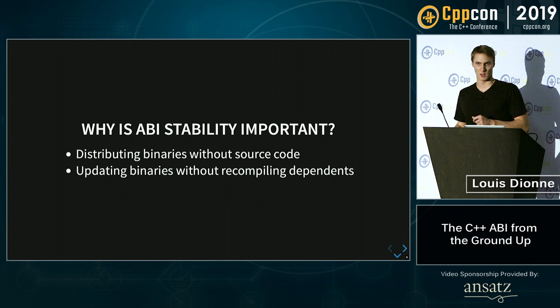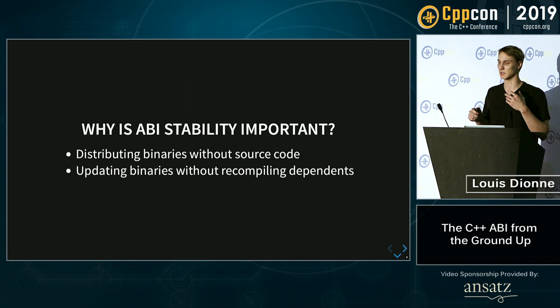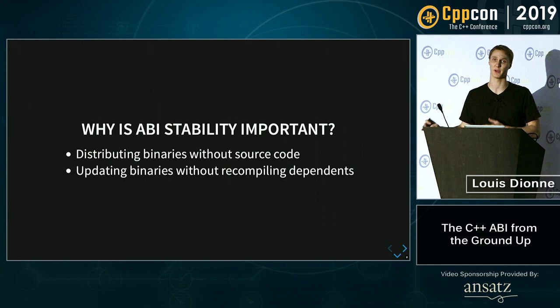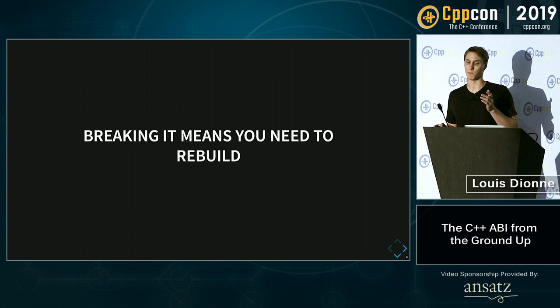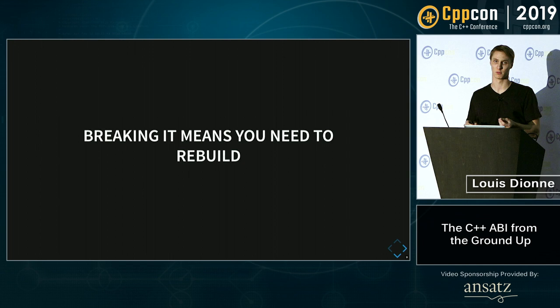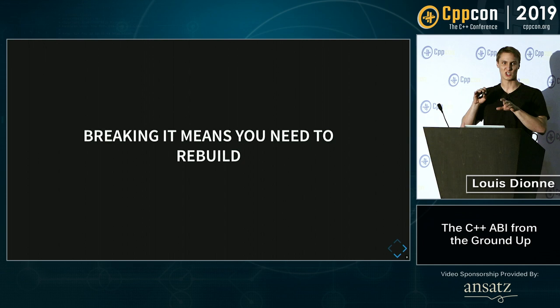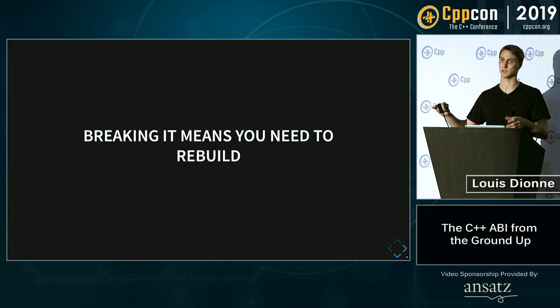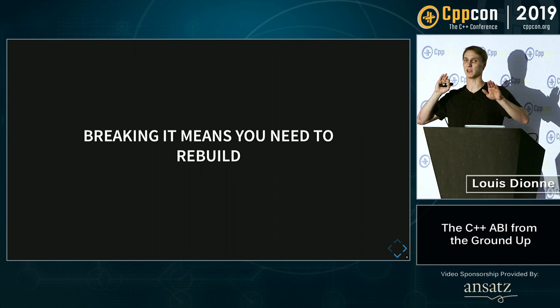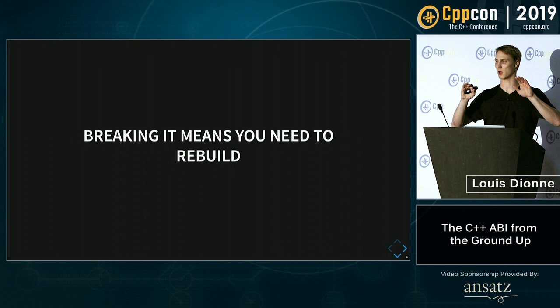One reason why ABI stability is important is because it allows you to distribute binaries without having to distribute the code, and it allows you to update those binaries without having to recompile all the dependents of your libraries. Just like an API break means the programmer needs to go and change source code, when you change the ABI the compiler itself has to do work to adjust the binaries. I really like to think of API and ABI as the same thing except for different customers — one for the compiler, one for the programmer.